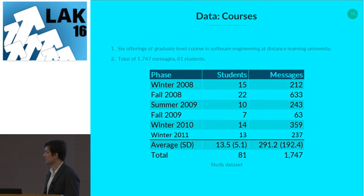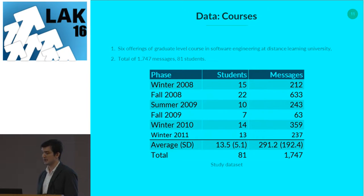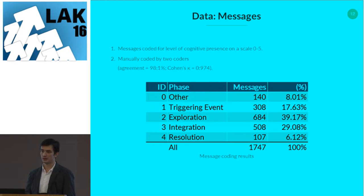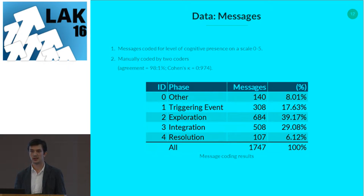Overall we had six offerings of the same course — a fully online graduate-level software engineering course at a distance learning university. We had six offerings, on average 14 students each, 81 students in total, and 1,700 messages in total. Messages were coded on a scale from 0 to 5: 0 is a non-cognitive message (coded as 'other'), and 1 to 4 are the four phases of cognitive presence. Coding agreement was very high — only 31 messages had disagreement out of 1,700, giving a kappa of 0.97.